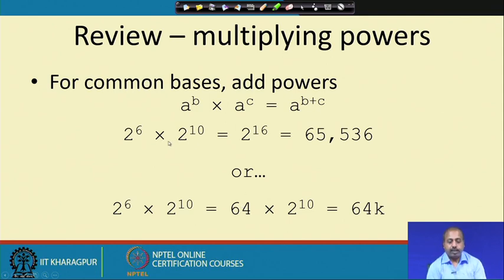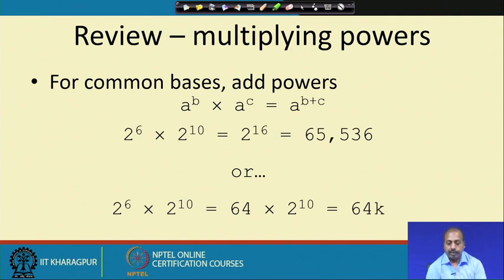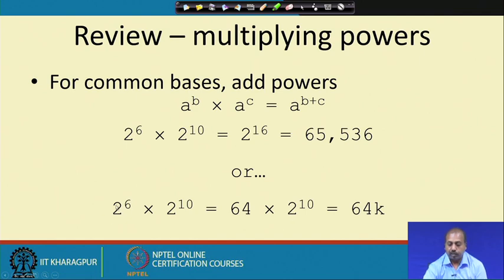Some common rules: for a common base, you can add powers when multiplying. So a^b × a^c = a^(b+c). For example, 2^6 × 2^10 = 2^16 = 65536, or equivalently 64 × 2^10 = 64k. So we can visualize it either as 65536 or as 64k.